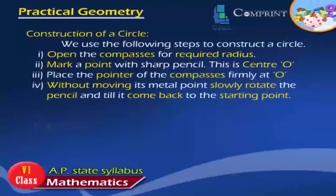Construction of a circle: We use the following steps to construct a circle. One, open the compass for required radius. Two, mark a point with sharp pencil. This is center O. Three, place the pointer of the compass firmly at O. Four, without moving its metal point, slowly rotate the pencil till it comes back to starting point.